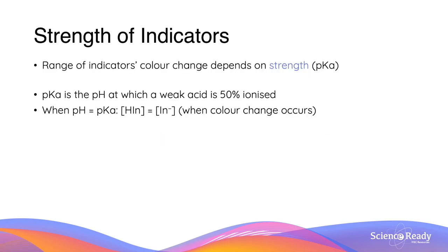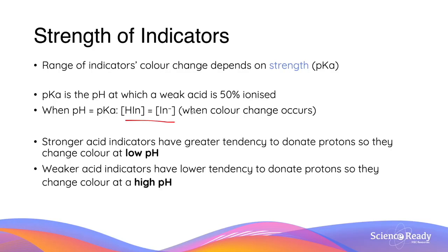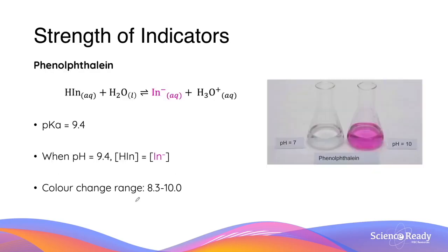The range of an indicator's colour change depends on its strength, or the pKa. The pKa is the negative log of the acid's dissociation constant Ka, and it equals the pH when the weak acid is 50% ionised — that is, when the HIn concentration equals the conjugate base In⁻ concentration. Phenolphthalein has a pKa of 9.4, meaning the equivalence point — where the weak acid and conjugate base concentrations are equal — occurs at pH 9.4, which is why its colour change range is between 8.3 and 10.